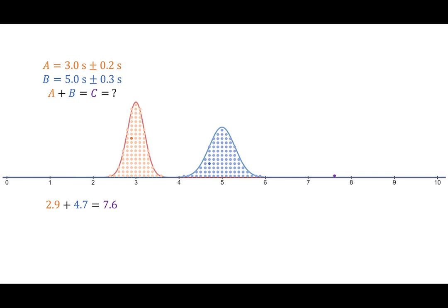But by random chance, I picked 2.9 here and 4.7. So then the sum is at 7.6. And we can repeat this many times. In fact, I'm going to repeat it 100 times just to build up the actual distribution.